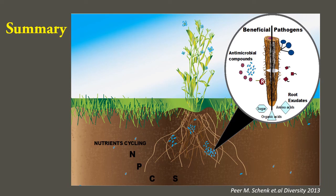In summary: plant roots release root exudates which attract microbes. These microbes can be beneficial by providing nutrients, or harmful as pathogens. Rhizosphere research has led to the development of various commercial products boosting agricultural yield.